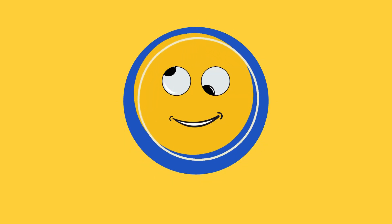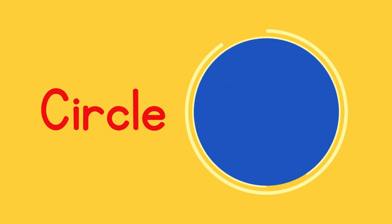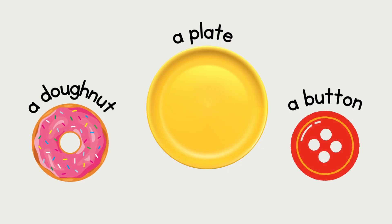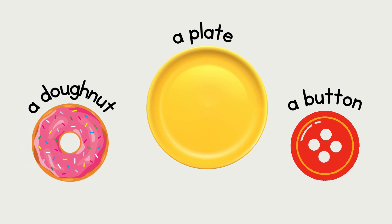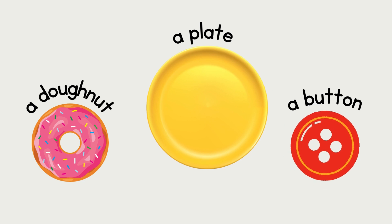Which shape is it? It goes round and round, all around. It's a circle! A circle goes round and round, all around. Here are some examples of things that look like a circle shape: a doughnut is a circle shape, a dinner plate is also a circle shape, and a button also looks like a circle shape.